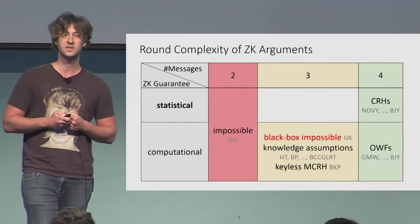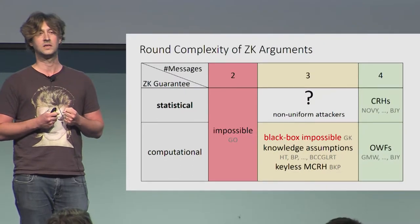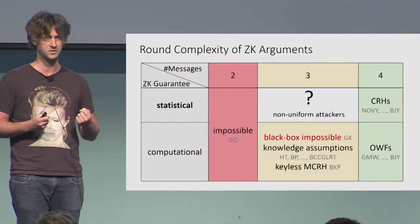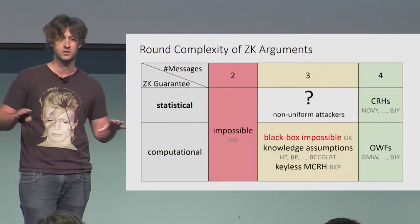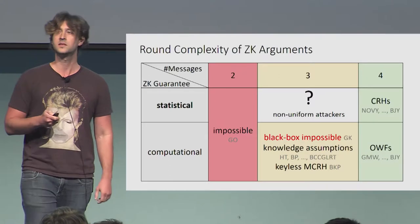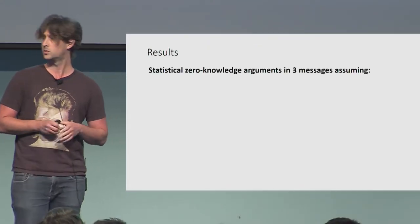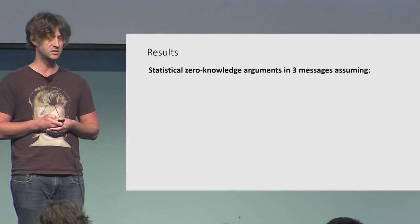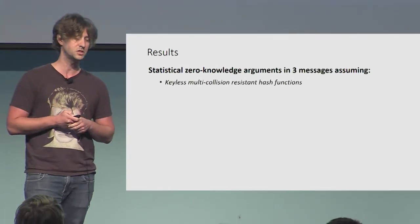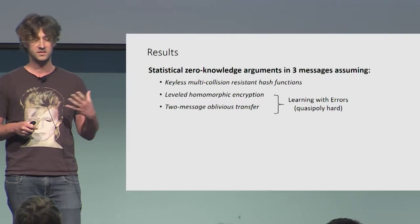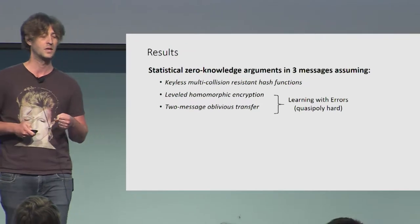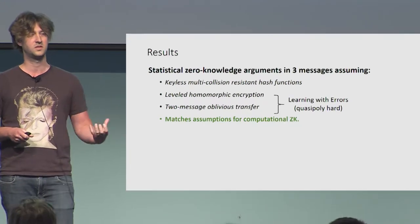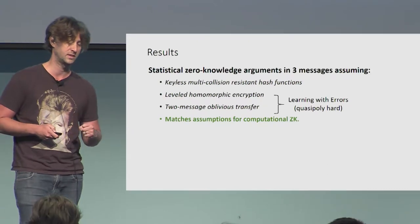What about statistical zero-knowledge? Here we basically don't know much. In fact, there are no protocols, not even under non-standard assumptions including knowledge assumptions, at least for general non-uniform attackers. And this is where our work comes in. Our main result is a statistical zero-knowledge protocol with optimal round complexity — namely three messages — assuming keyless multi-collision-resistant hash functions and other standard assumptions that you can instantiate, for example, from LWE. This basically matches the same assumptions used before for computational zero-knowledge, but achieves the stronger statistical guarantee.